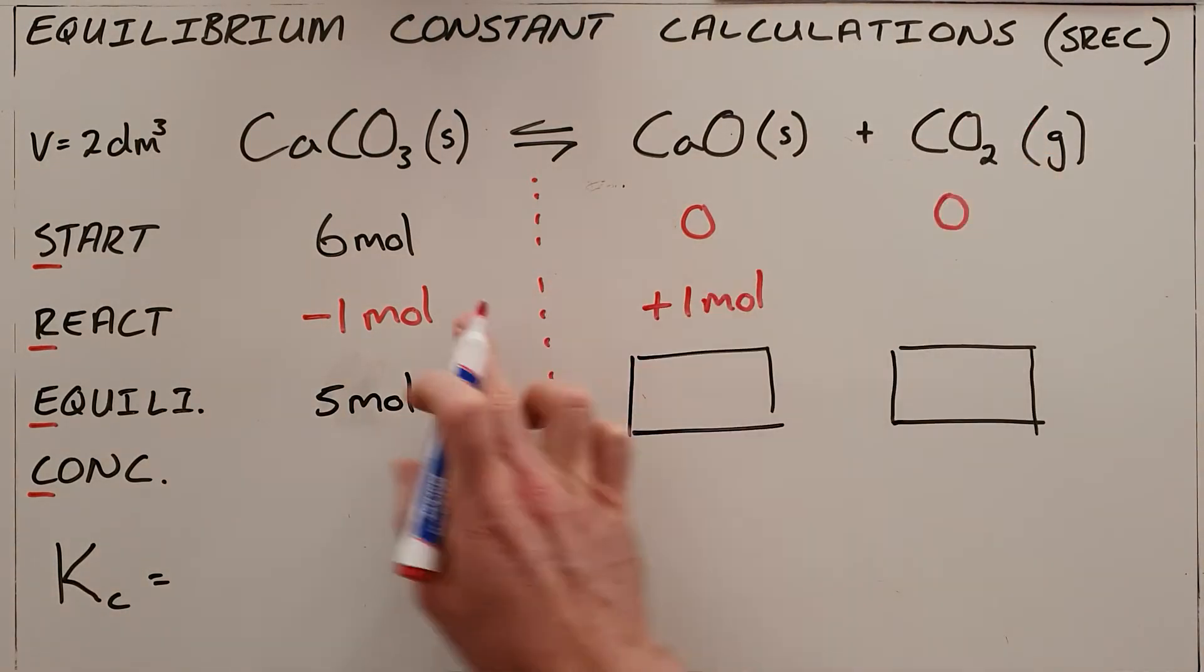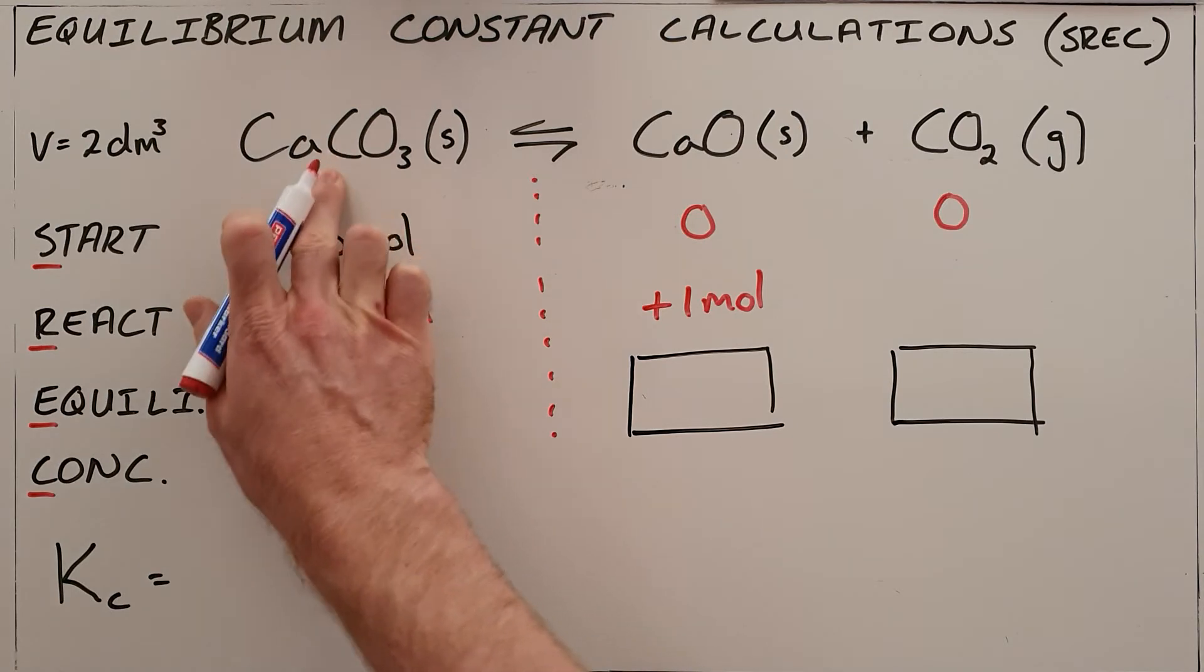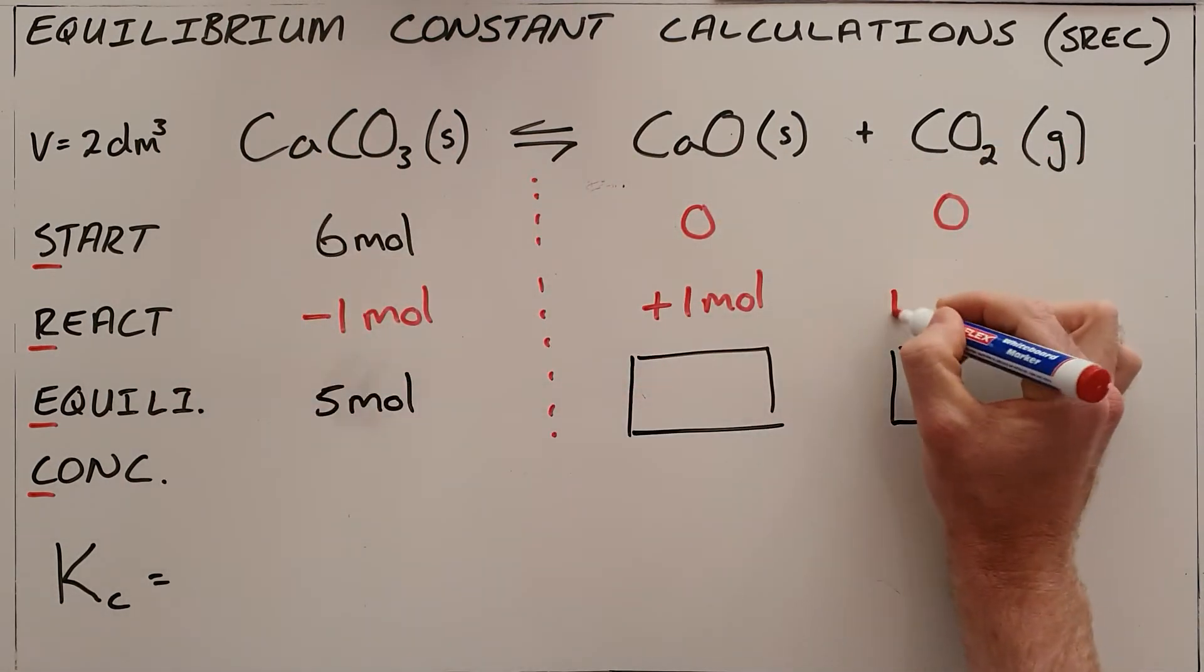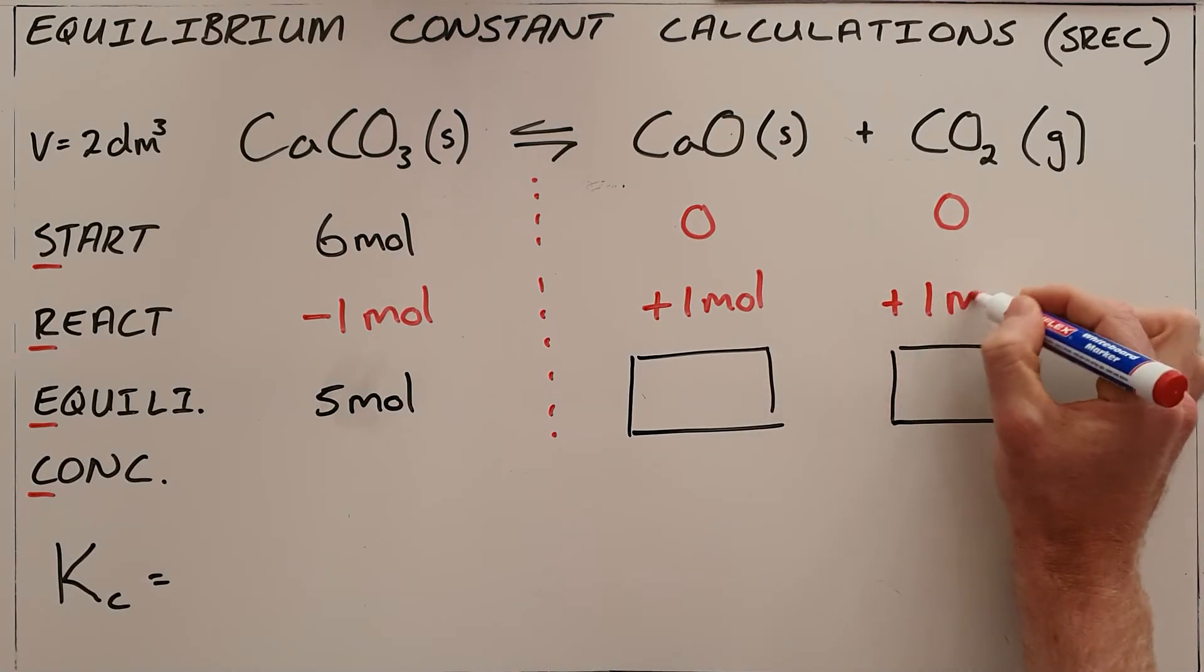Same goes for carbon dioxide, the ratio of what we reacted to what we formed is 1 to 1, so if we used up 1 mole there, we will form 1 mole here.